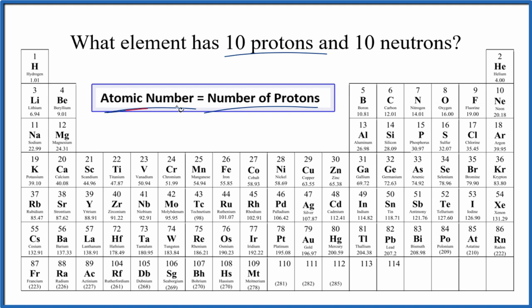The atomic number is the number right above the element symbol. It's a whole number, and it increases by one as we go across periods, the rows on the periodic table.